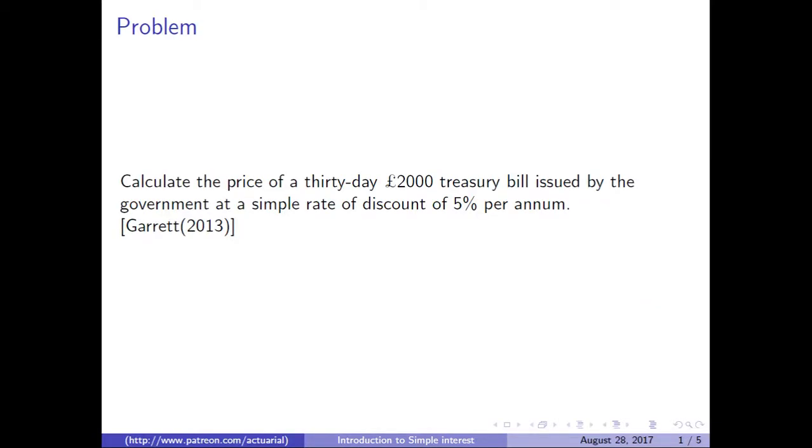Problem. Calculate the price of a 30-day £2000 treasury bill issued by the government at a simple rate of discount of 5% per annum.